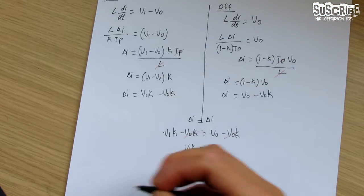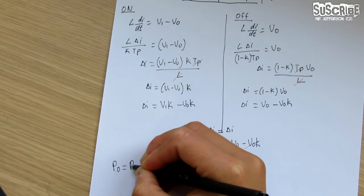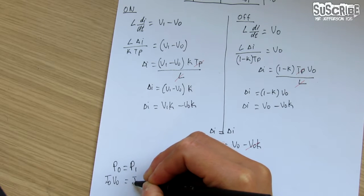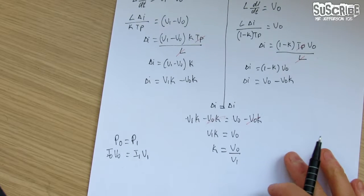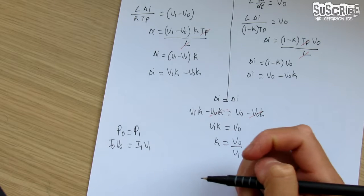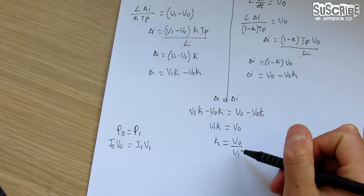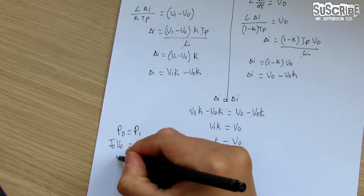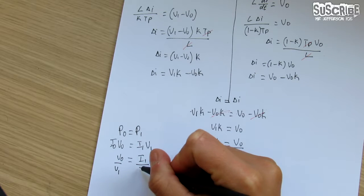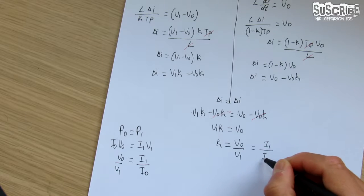In terms of power, as before, we know that P_out = P_in, which means I_out·V_out = I_in·V_in. From this we can derive the current ratio I_in / I_out.